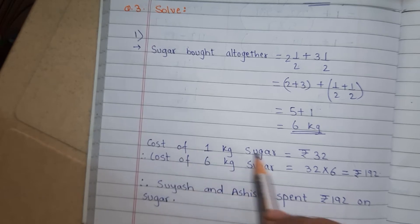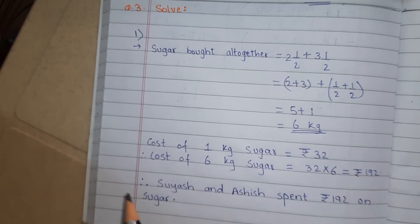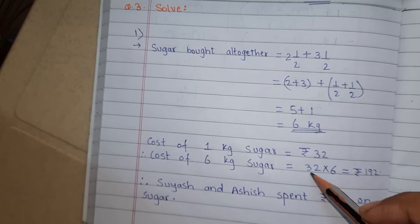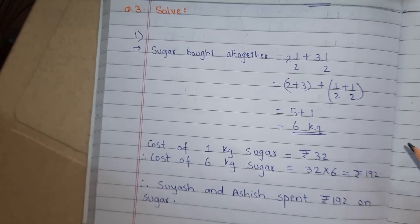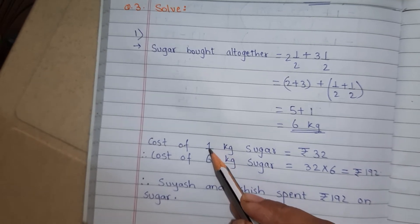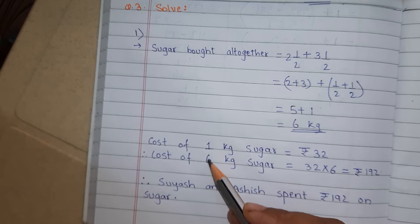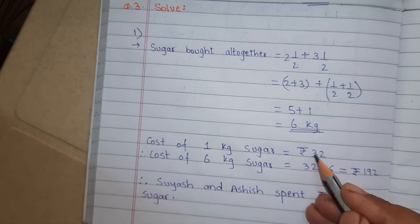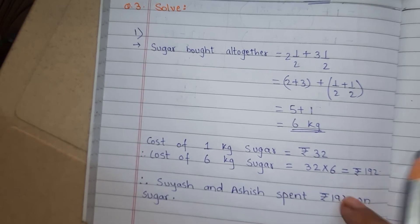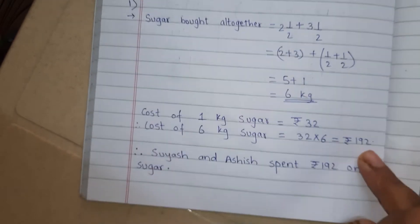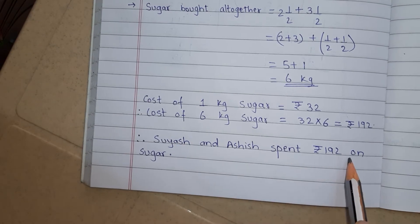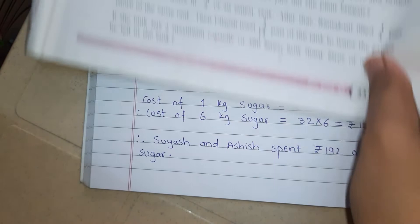Cost of 1 kg sugar, it is rupees 32. So what will be the cost of 6 kg sugar? Multiplication 32 multiply by 6. When cost of 1 thing is given and we have to find the cost of many, then we have to multiply the cost and the number. So 32 into 6. So answer is 192. Suyash and Ashish spent 192 on sugar. Understood?